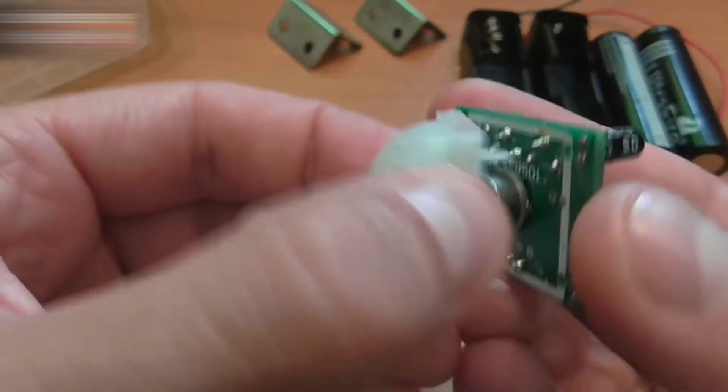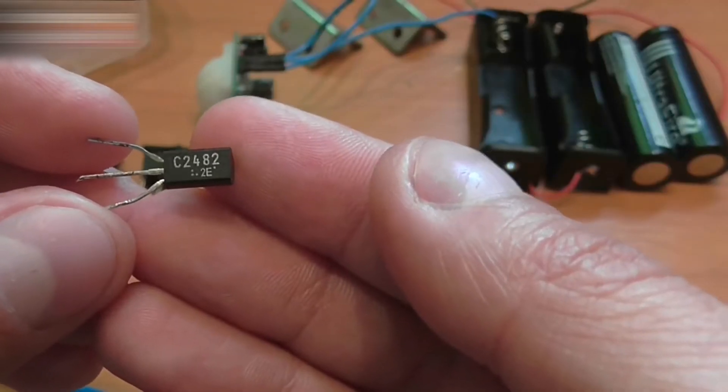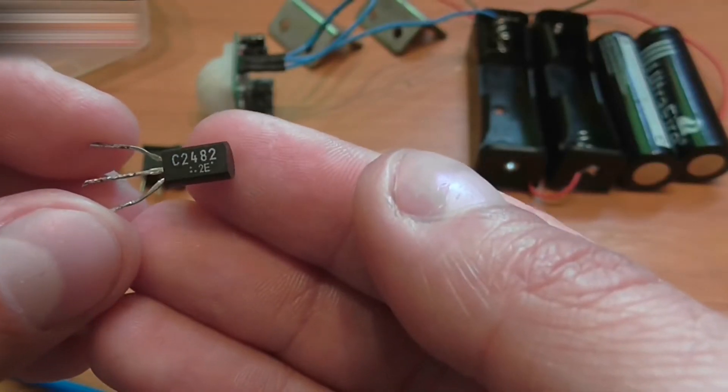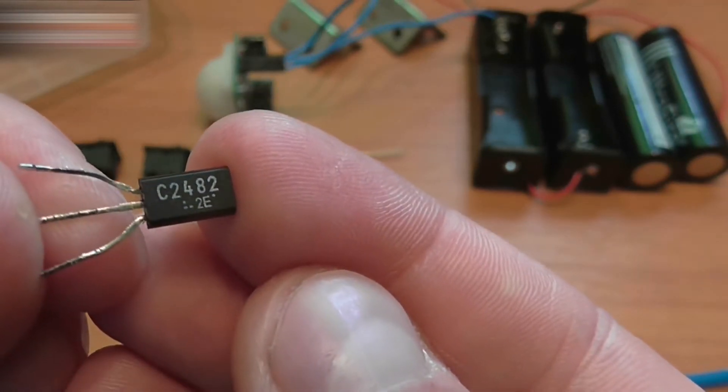You will need an HCSR501 motion sensor, one C2482 NPN transistor. You can use any other NPN transistor.